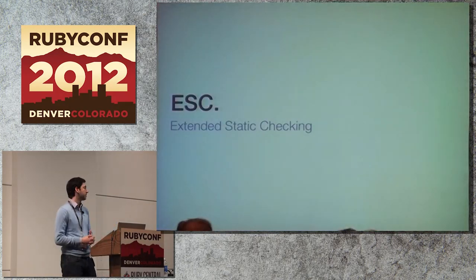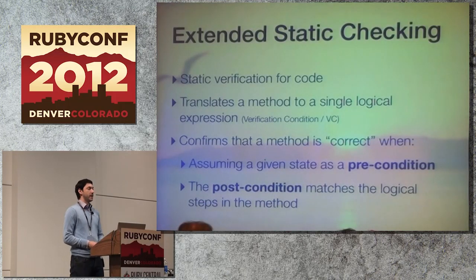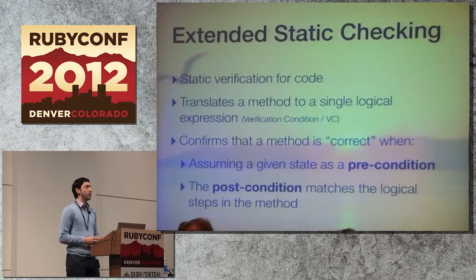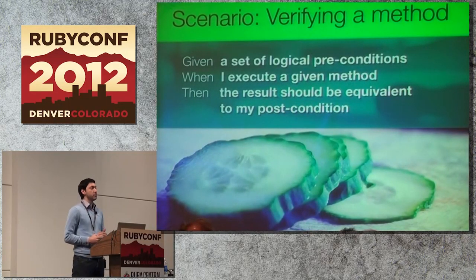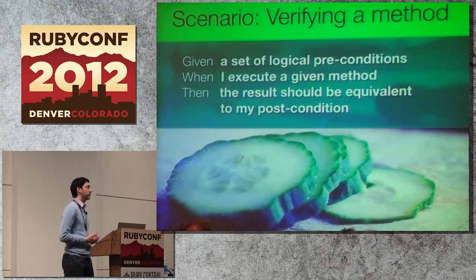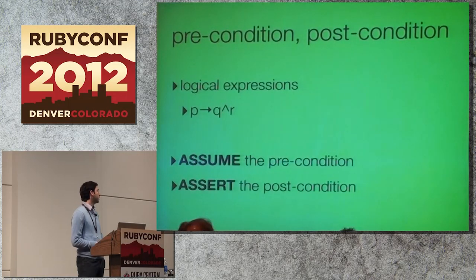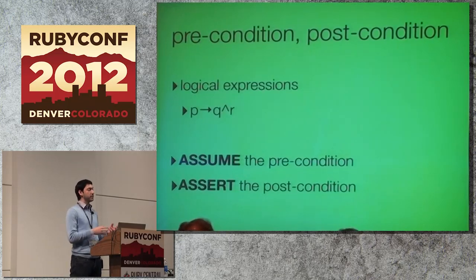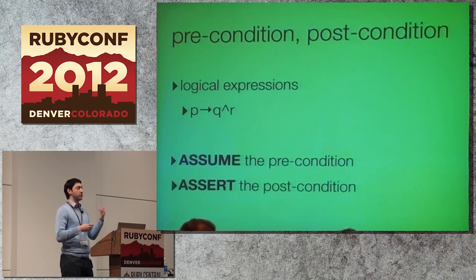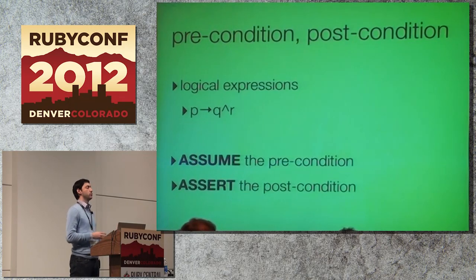ESC is extended static checking — it's static verification for code. What we do is translate a method into a single logical expression, like Boolean algebra. We can confirm that a method is correct assuming a given precondition, meaning the post-condition matches the logical steps in that method. Preconditions and post-conditions are logical expressions in the form of Boolean algebra — P implies Q and R. We assume the precondition is correct and assert that the post-condition will equal the equivalent of what we set our methods to.